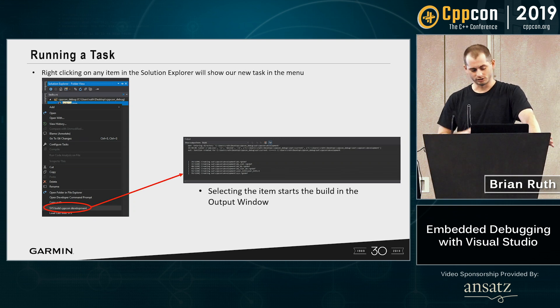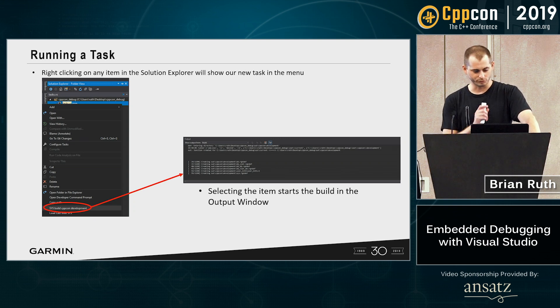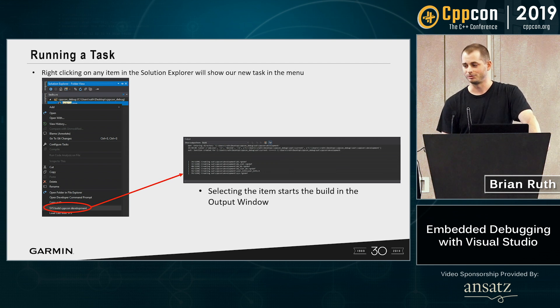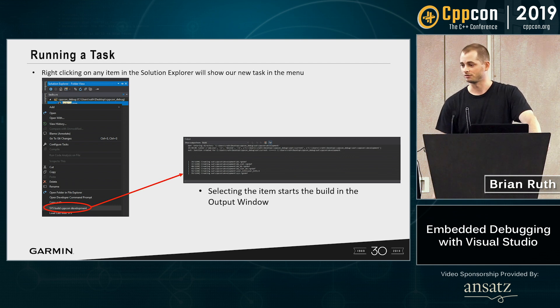To run it, after saving and refreshing a few times, if you right-click in your Solution Explorer, way down at the bottom you may be able to see "build CppCon development". Go ahead and click on it, and it starts the build.